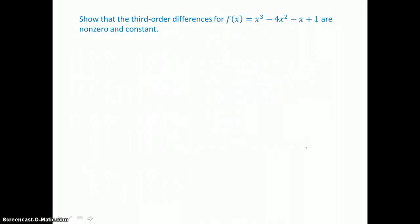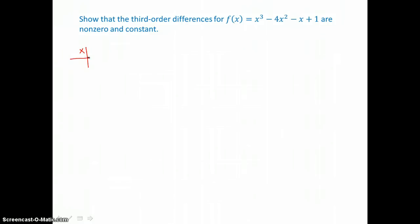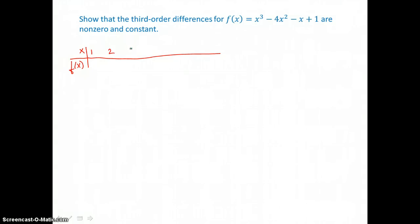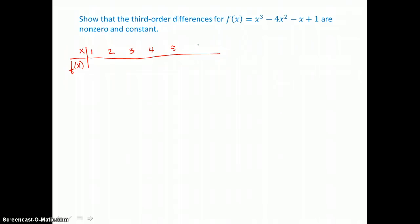In the second example, we want to show that the third-order differences for this cubic function are non-zero and constant. So we'll make a table for this function, putting x values on top and f of x values on the bottom. We'll let our x values be consecutive integers: 1, 2, 3, 4, 5, and 6 should be enough.